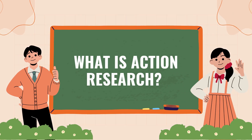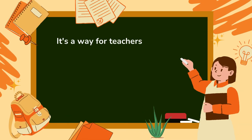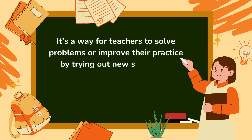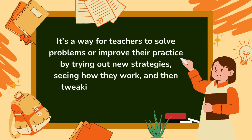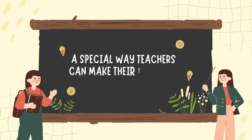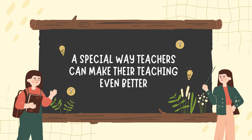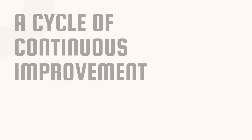So let's start with the basics. What is action research? It's a way for teachers to solve problems or improve their practice by trying out new strategies, seeing how they work, and then tweaking them to get better results. It's a special way teachers can make their teaching even better — think of it as a cycle of continuous improvement.